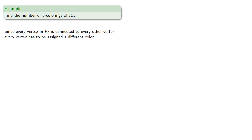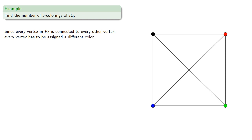For example, let's try to find the number of five colorings of K4. Since every vertex in K4 is connected to every other vertex, each vertex has to be assigned a different color.